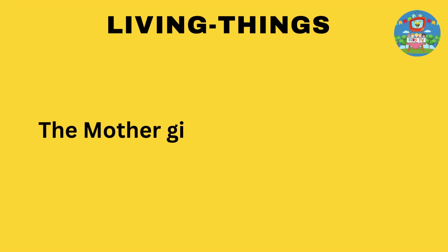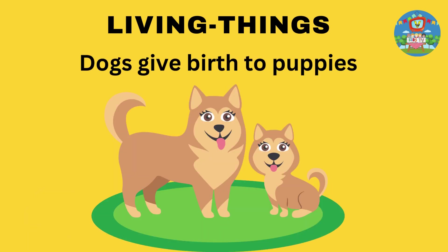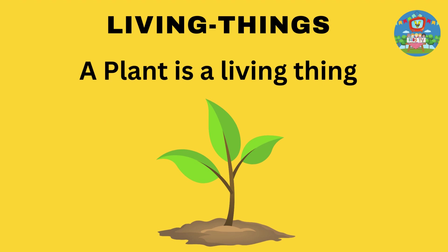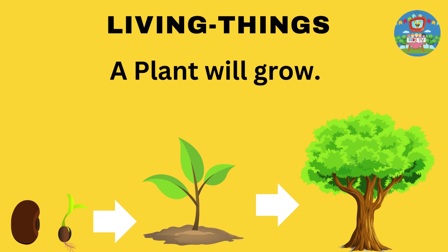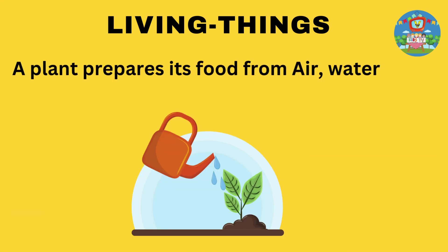The mother gives birth to their child. A seed grows into a plant and a plant grows into a tree. A plant prepares its food from air, water, and sunlight.